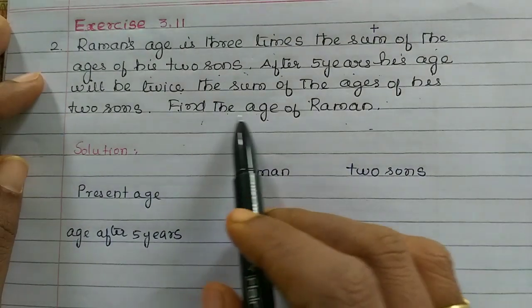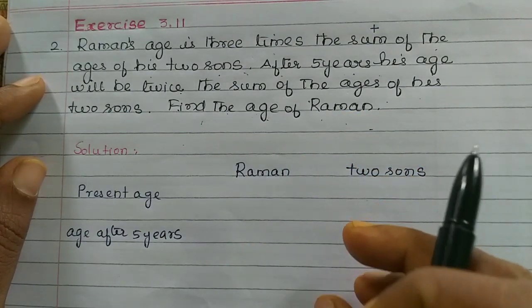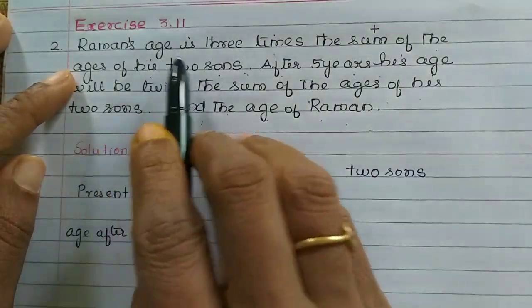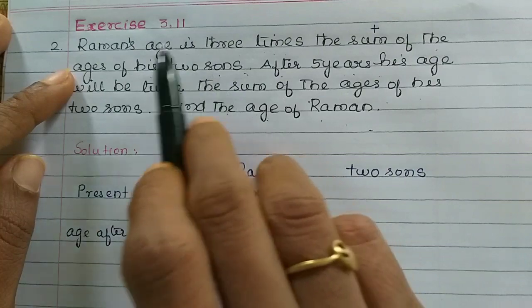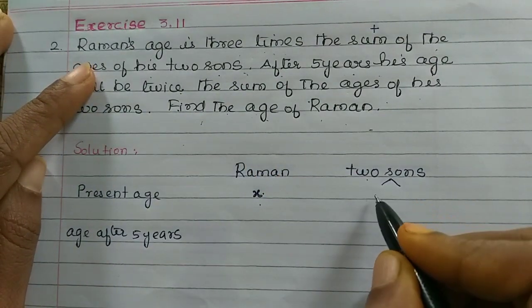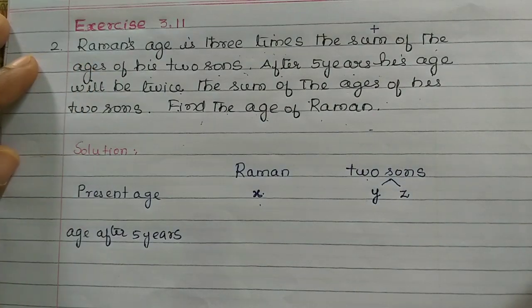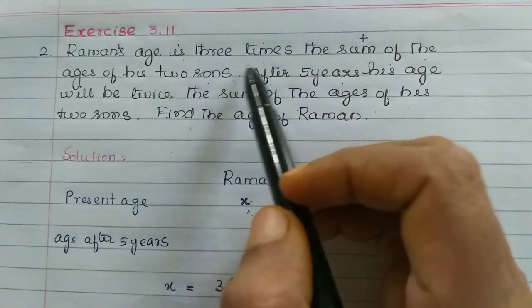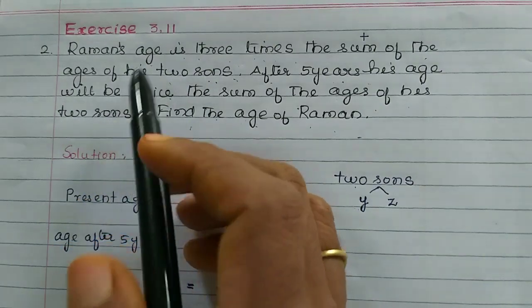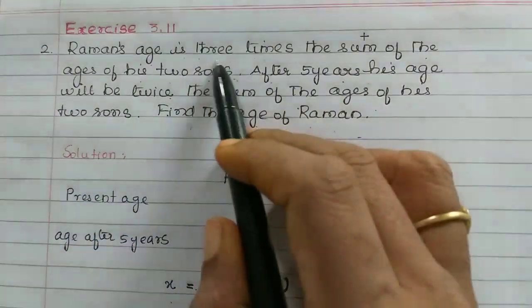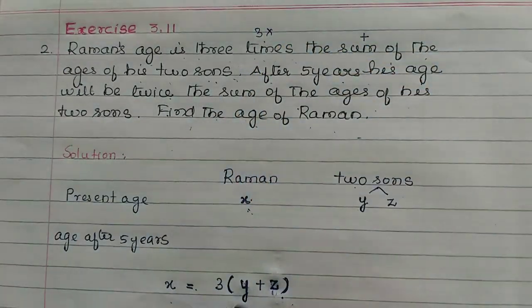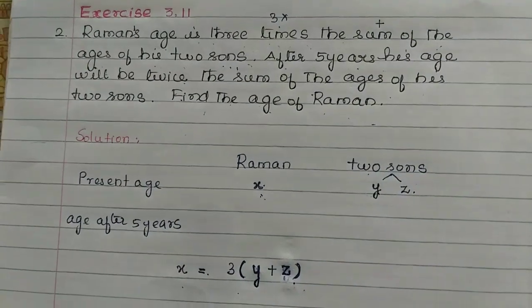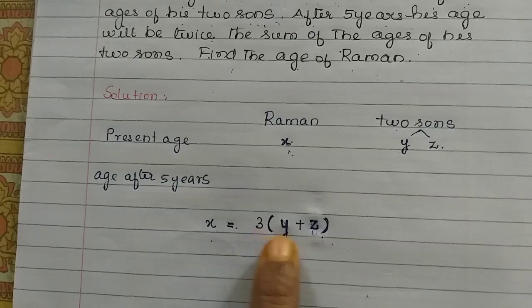First, find the age of Raman. What is Raman's present age? Let x be Raman's present age. Raman's age is 3 times the sum of the ages of his 2 sons. So the first equation is: x is equal to 3 into y plus z.